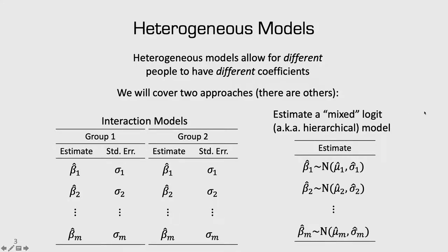Another approach is called a mixed logit model or a hierarchical model. In this case, we still have baseline estimates of single parameters — beta 1, beta 2, and so on — except we assume that each of these parameters follows its own distribution. For example, beta 1 is normally distributed across the population, with a mean parameter and a standard deviation parameter, so beta 1 is allowed to vary across people in the survey but is restricted to vary according to some distribution. Both approaches estimate more parameters than a homogeneous model, but remain feasible.